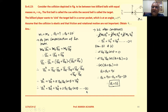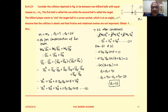Since the collision is elastic, kinetic energy is also conserved. The initial kinetic energy is that of ball one only, as ball two is stationary: half M1 V1i squared equals half M1 V1f squared plus half M2 V2f squared. Cancelling the halves and the equal masses from both sides gives us V1i² = V1f² + V2f² — equation 2.